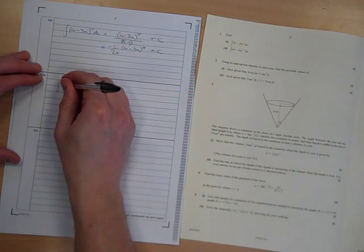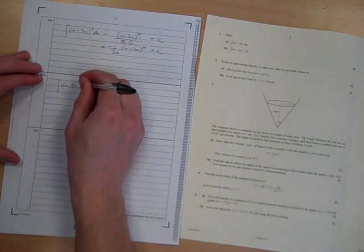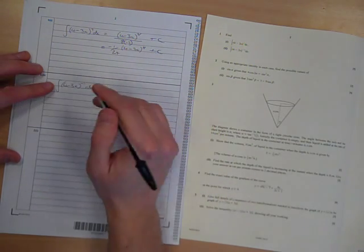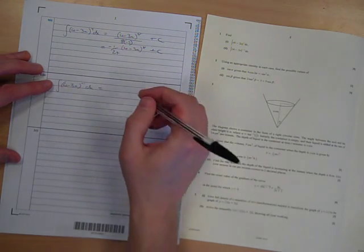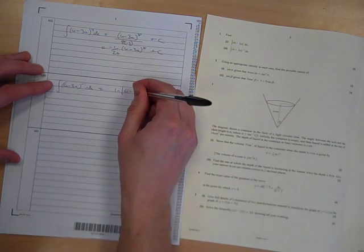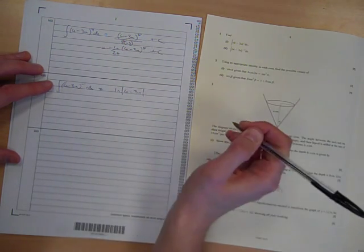Part b, 4 minus 3x to the minus 1. Well, this time it's a natural log thing, isn't it? We can't add 1 to that. So this is going to be the natural log of the modulus of 4 minus 3x.